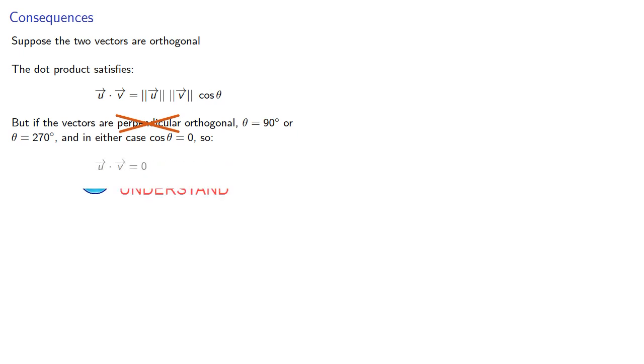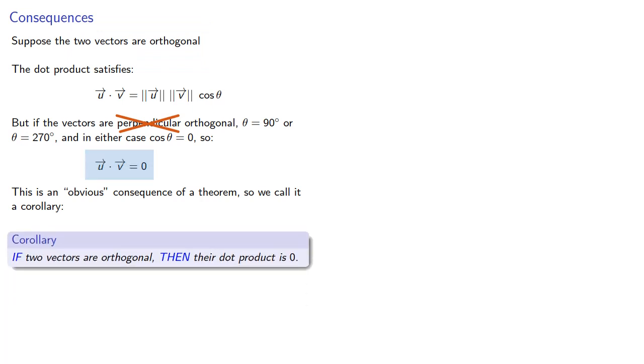And so we have... Now this is an obvious consequence of a theorem, and in mathematics we call such obvious consequences corollaries. Since we're starting with two vectors that are orthogonal, and we're concluding that their dot product is 0, we can say that if two vectors are orthogonal, then their dot product is 0.